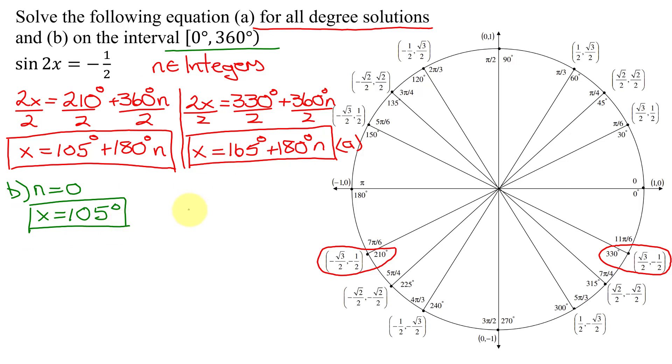And from this one, x equals 165 degrees, because 180 times 0 is 0. So there are two of my solutions.